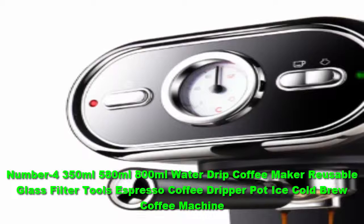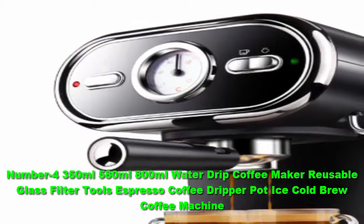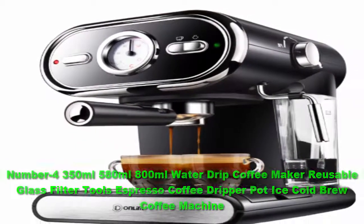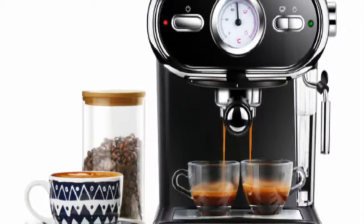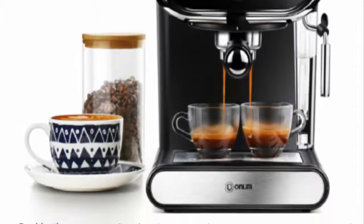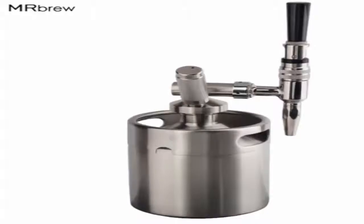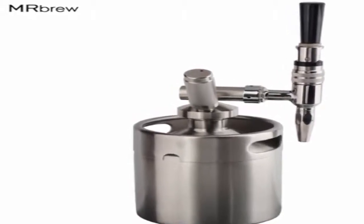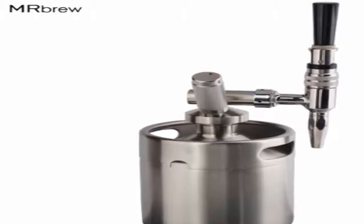Number 4 350ml 580ml 800ml Water Drip Coffee Maker Reusable Glass Filter Tools Espresso Coffee Dripper Pot Ice Cold Brew Coffee Machine. Cold brew coffee is already one of the least fussy ways to get caffeinated, but this no-frills little number from Japanese coffee giant Hario couldn't be simpler. Coffee goes into the reusable mesh basket no cloth or paper filters to futz around with, and is submerged into cool or room temperature water. All it takes is time to do the rest of the work, the coffee will steep for 12-24 hours, after which you simply lift the grounds in the basket out of the finished liquid. While metal mesh can be somewhat tricky to scrub completely clean, it still beats the soaking and rinsing of cloth filters, and it creates far less waste than paper.